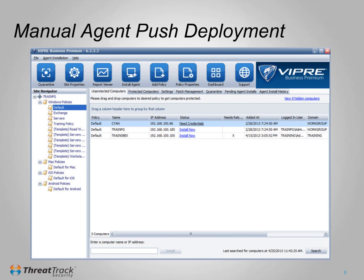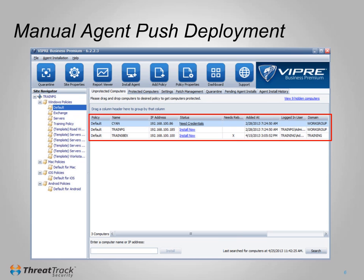Often, the most common method for managing agents is to push them manually from the Viper console. The Viper server will scan the local domain once per hour looking for Windows machines without the Viper Agent installed, and any it finds are added to the Unprotected Computers tab of the default policy. On this new install, I see three computers discovered and listed on the Unprotected tab: one is the Viper server itself, another is an Exchange server, and a third is a test server.